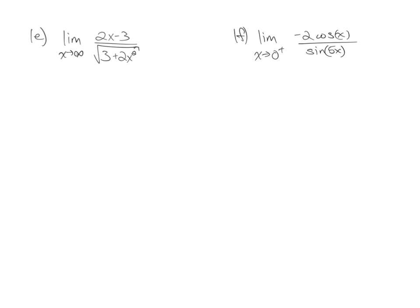On this page we have two more limits. The first one is the limit as x approaches infinity of 2x minus 3 all over the square root of 3 plus 2x squared. For this limit we need to know a couple of facts. The biggest power of x in the denominator looks like 2, but this isn't really a second power — it's going to be a first power because the square and the square root are acting on the same x. So it's really like an x to the first power.